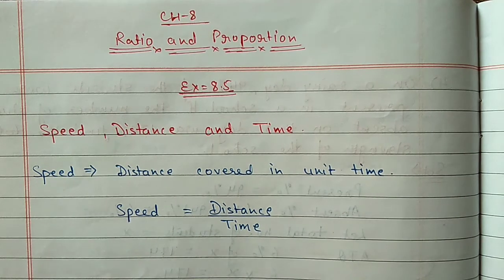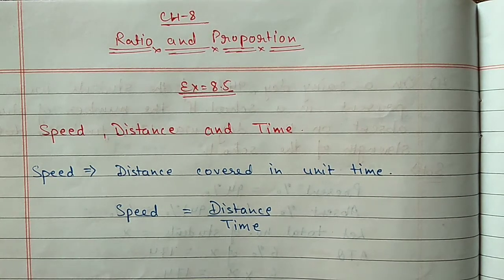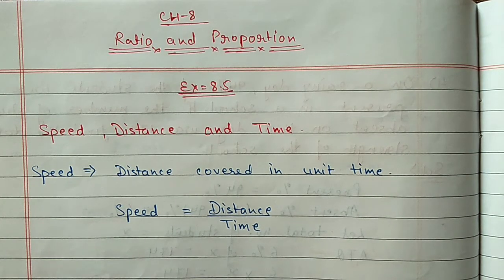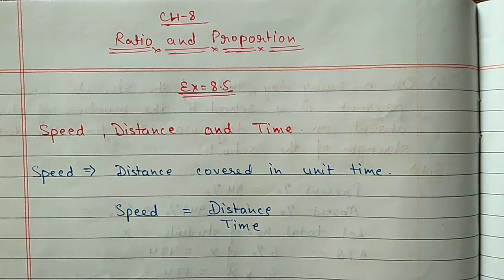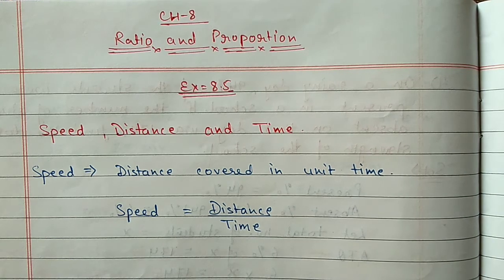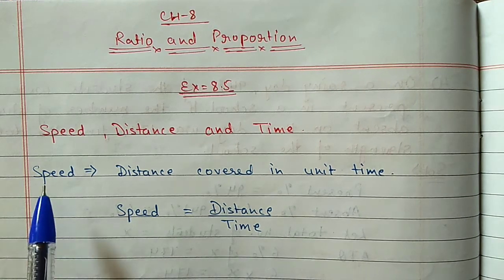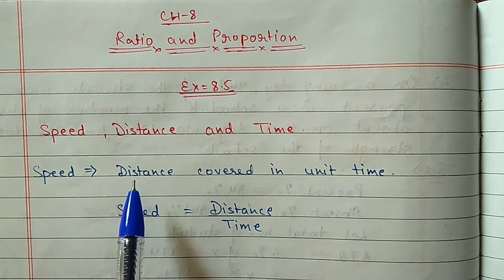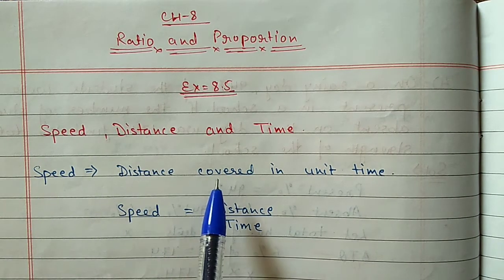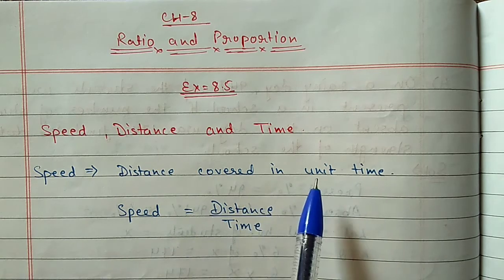Hello students, we are doing chapter number 8, Ratio and Proportion, and today we will start exercise 8.5. In this exercise we will get problems based on speed, distance and time. So first we will discuss what is speed. Speed means the distance covered by an object in unit time.